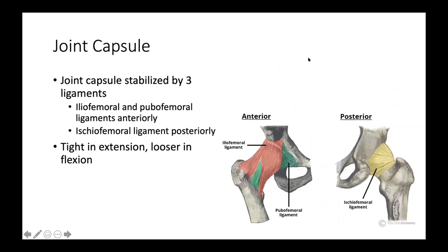The joint capsule on the outside is composed of three ligaments — two in the front and one in the back. In the front, you have the iliofemoral ligament and the pubofemoral ligament. In the back, you have the ischiofemoral ligament, also known as the Y ligament, which is one of the strongest ligaments in the body. These ligaments move with the hip — they are tight in extension and looser in flexion.